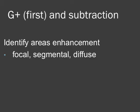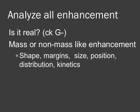Next we'll move on to scrolling through our linked peak — which should be our first gadolinium-enhanced axial image — and our subtraction images together to identify focal, segmental, or diffuse areas of enhancement. For each area you see, you want to decide: is it real? Check the pre-gadolinium image and make sure there's no patient movement producing an artifact. You want to decide if it's mass or non-mass-like enhancement. We'll be going through the BI-RADS criteria in the next video. We look at the shape, the margins, the size, the position, the distribution, and the kinetics of the enhancement, and we need to analyze these for every area of enhancement that we see.